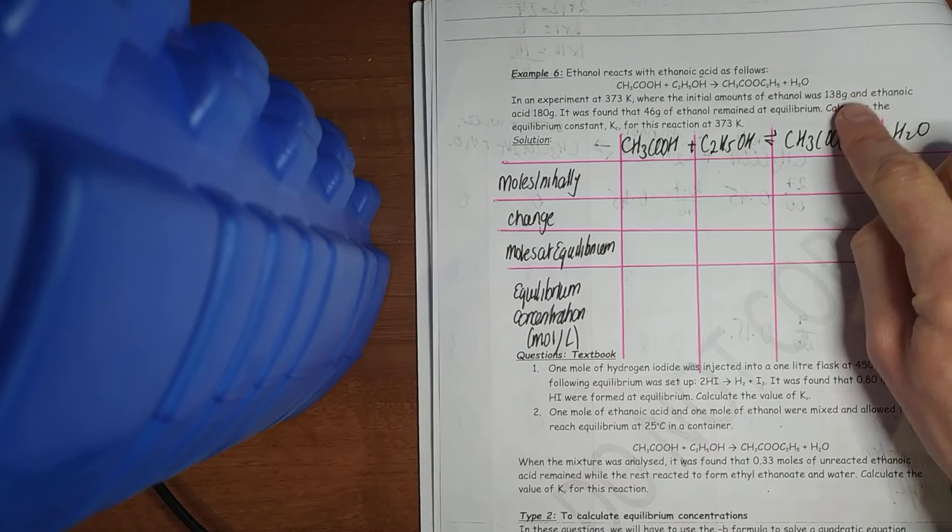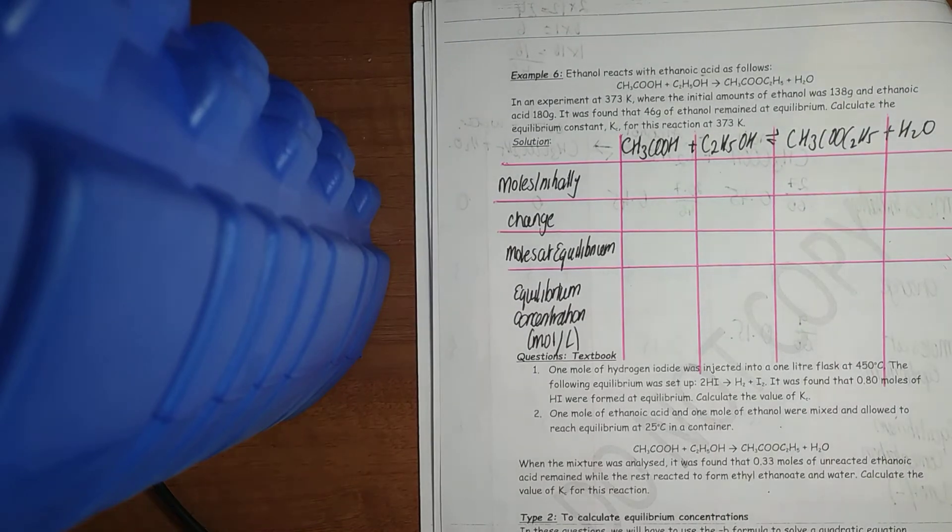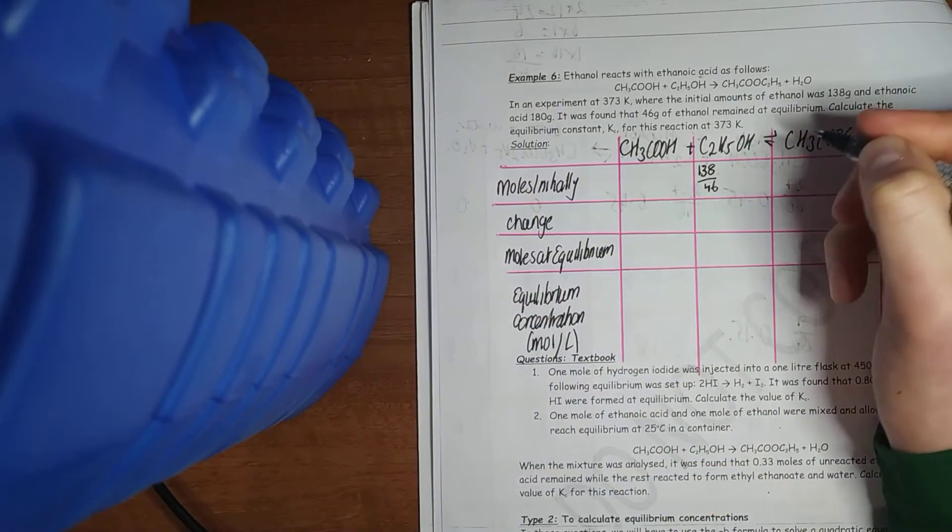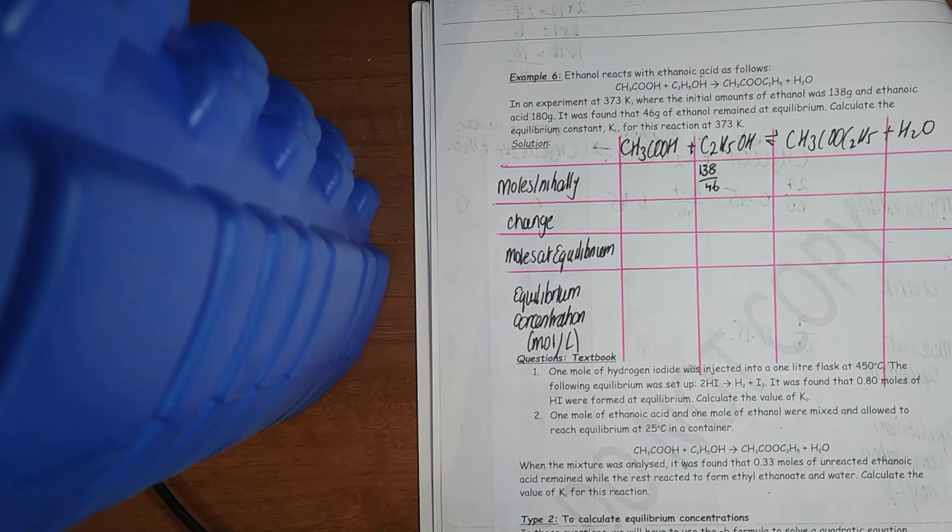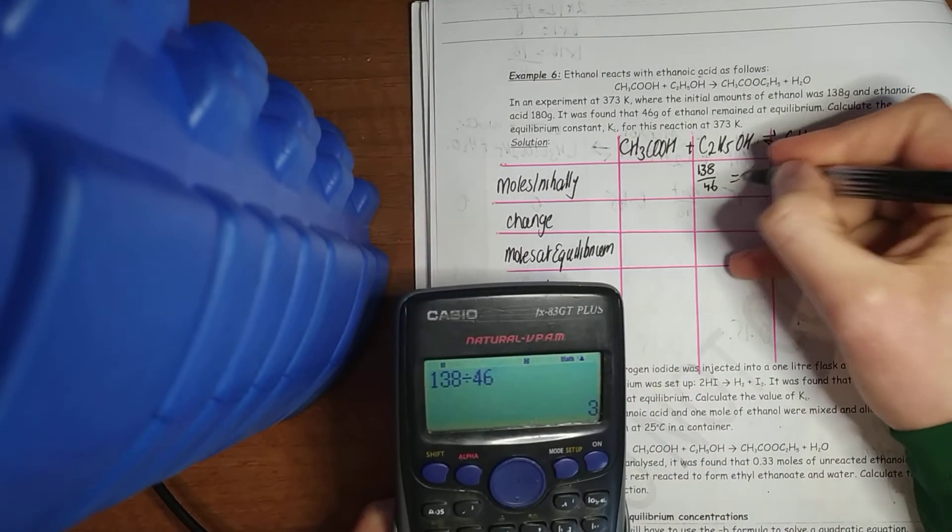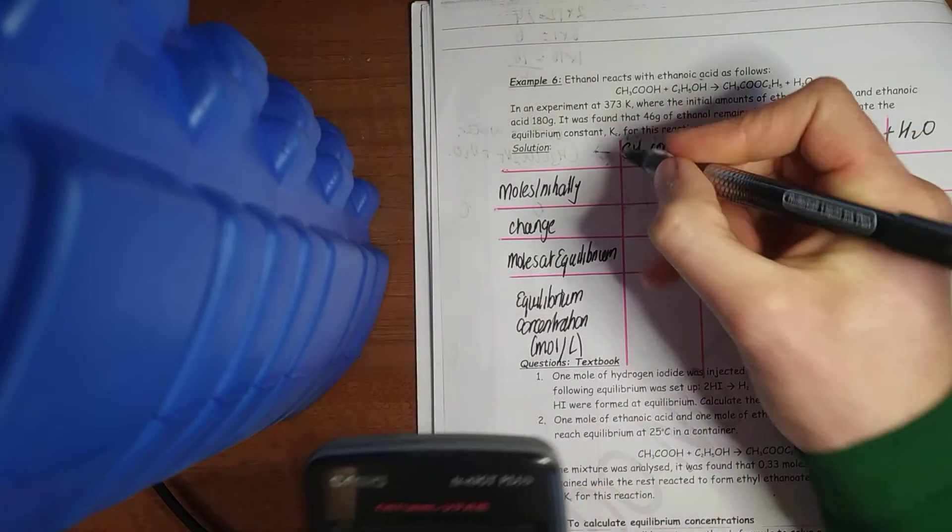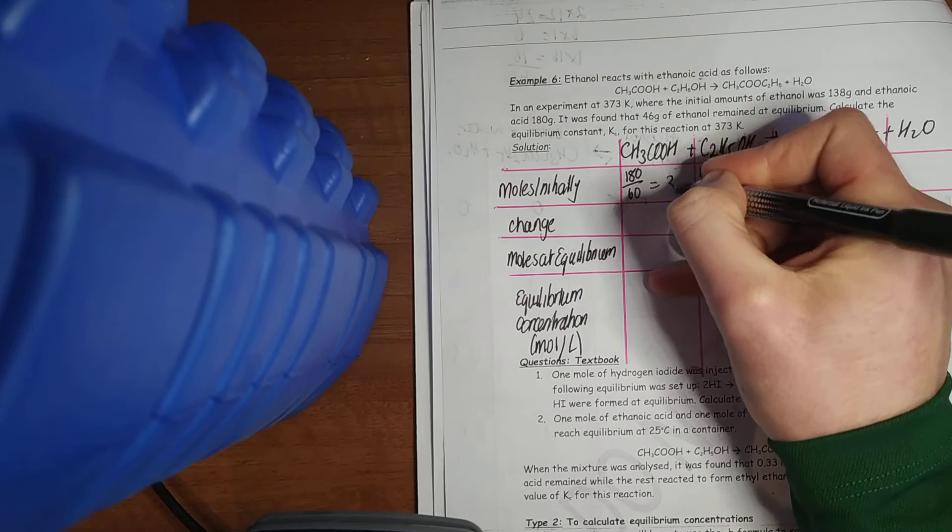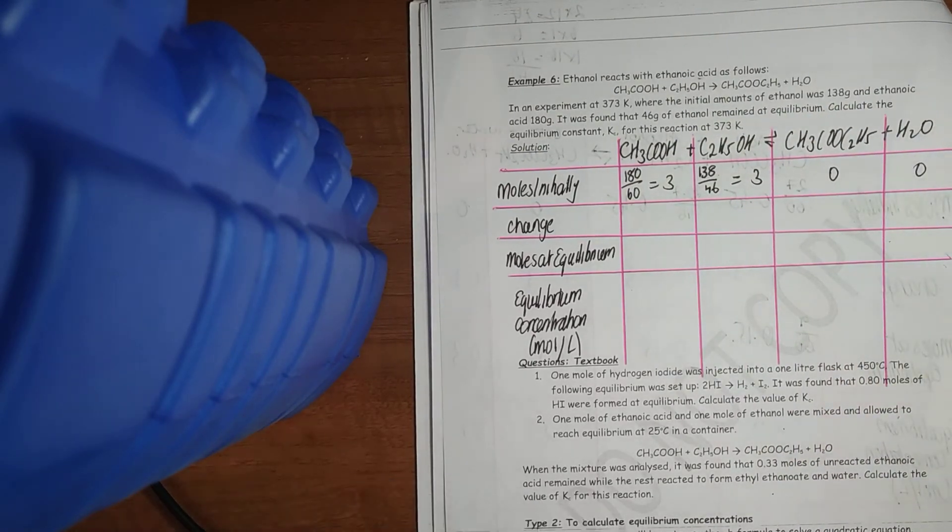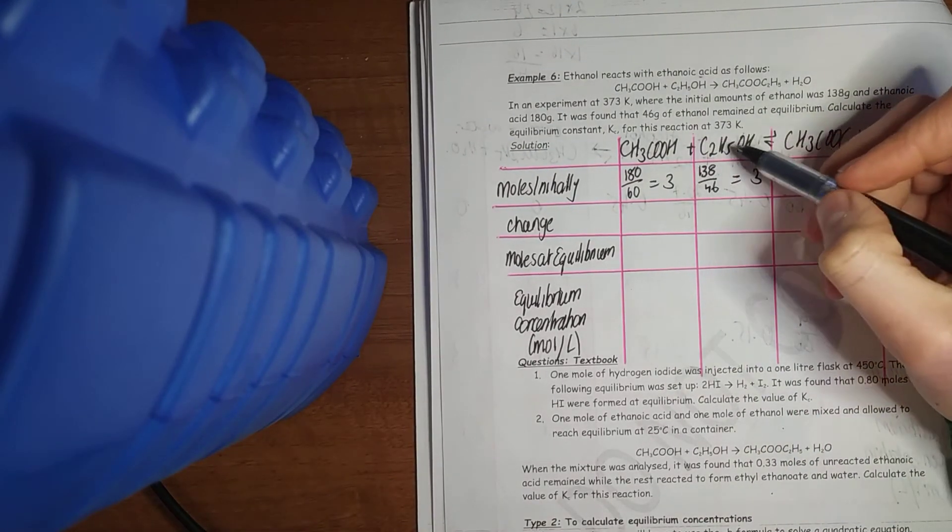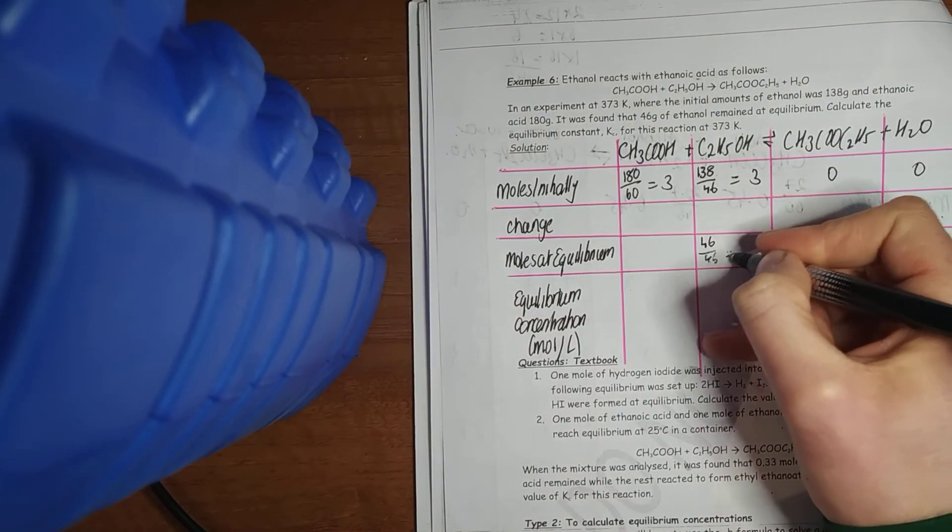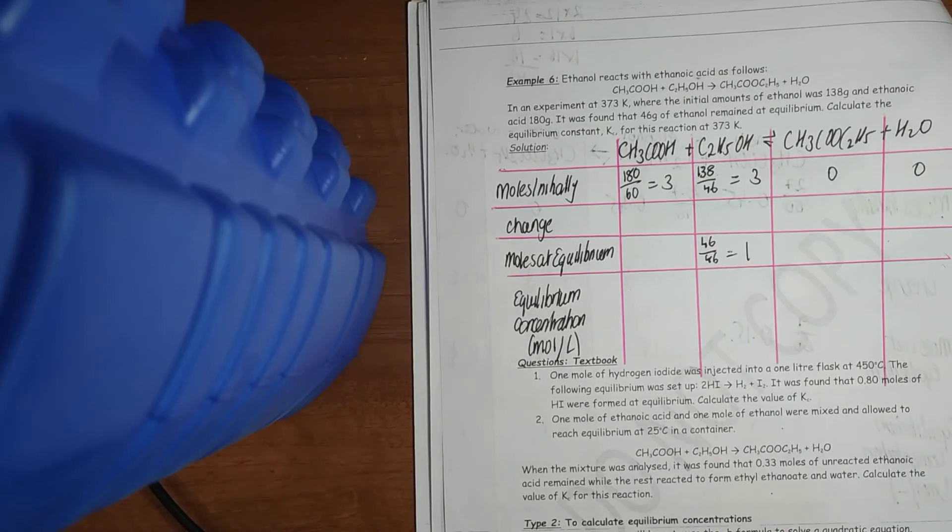Moles at equilibrium. And equilibrium concentration. The initial amounts of ethanol were 138 grams. We worked out the mass in the previous one, which is 46, the relative molecular mass. So 138 divided by 46, we get 3 moles. Ethanoic acid, 180. Divide that by 60, which is its relative molecular mass. We get 3. And our products are 0 and 0. It's found that 46 grams of ethanol remained. So 46 over 46 gives me 1. That's enough to work it out.